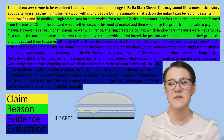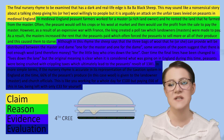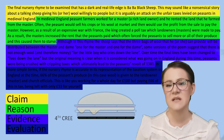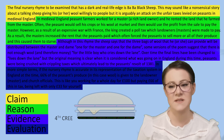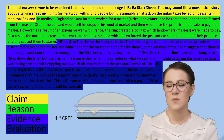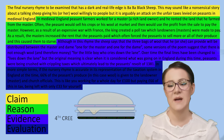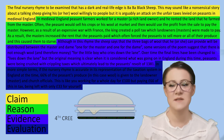In more simple terms, if the nursery rhyme is accurate in its representation of the taxation system in England at the time, 66% of the peasants' produce — in this case wool — is given to the landowner or master and church officials. This is like you working for a whole day for £100, but paying £66 of this in tax, being left only £33 for yourself.